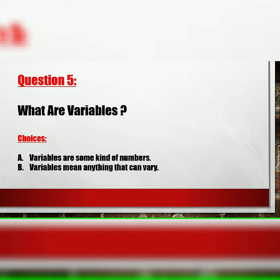Question 5: What are variables? Your choices are A: Variables are some kind of numbers. B: Variables mean anything that can vary.